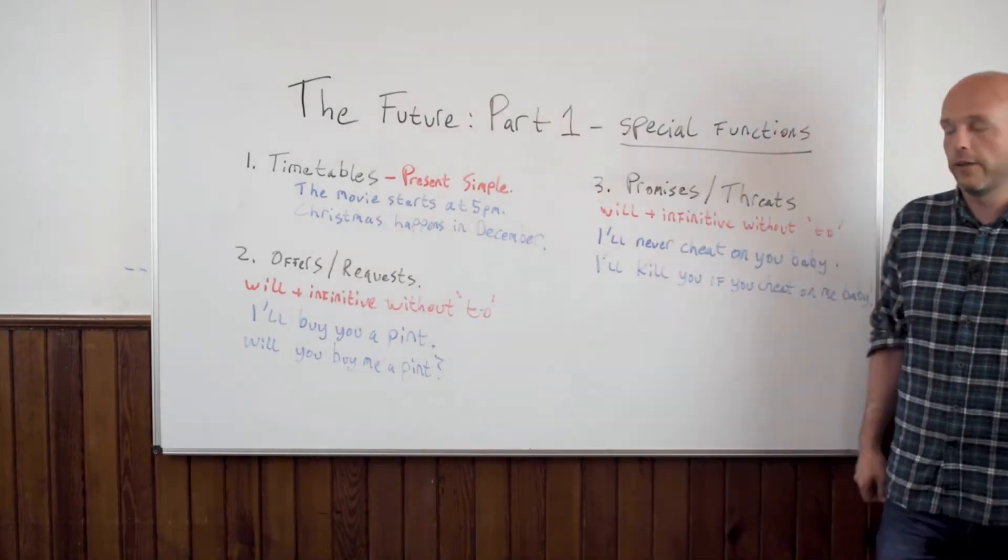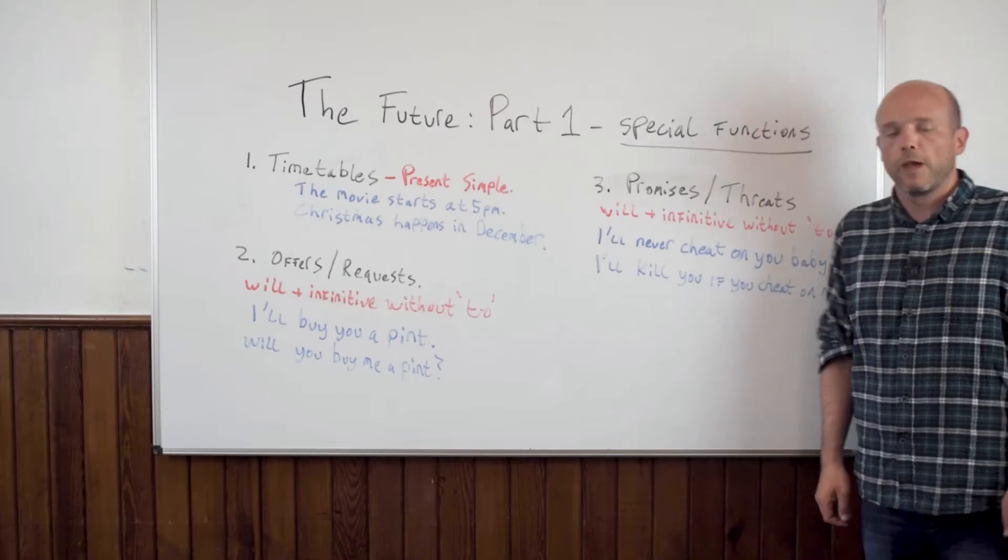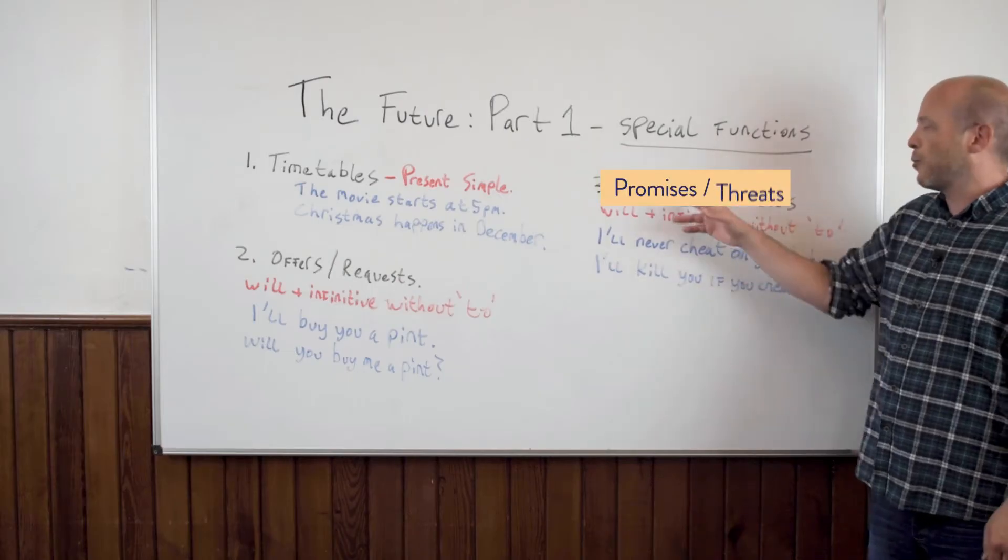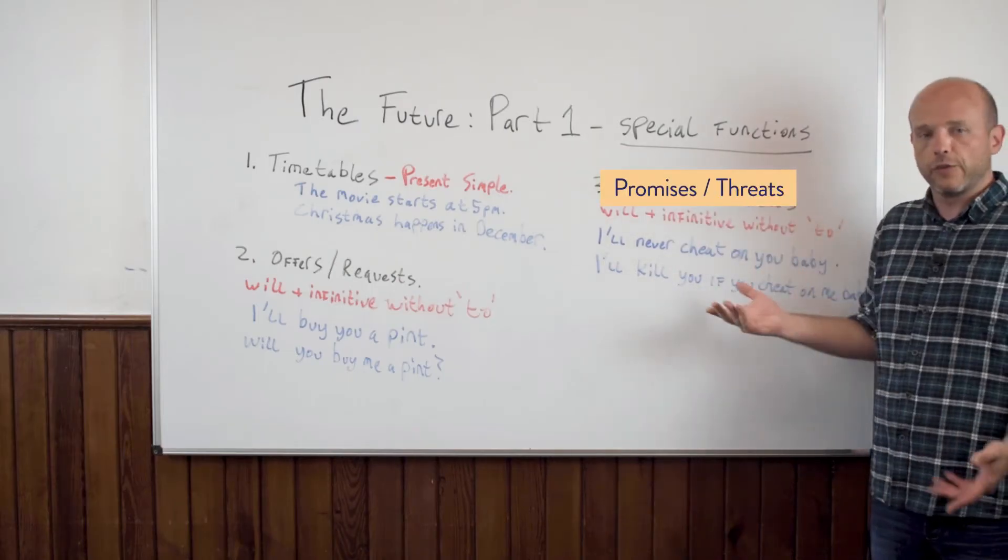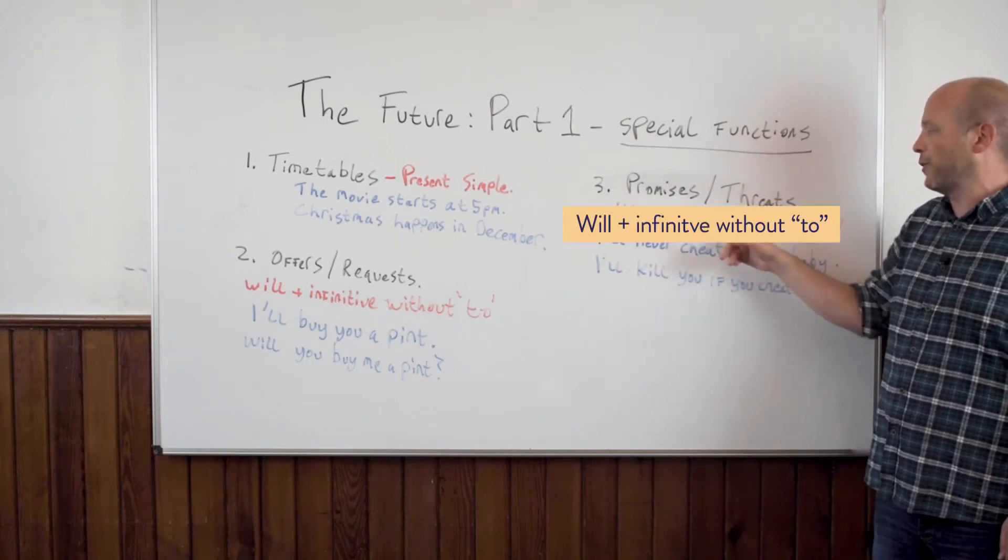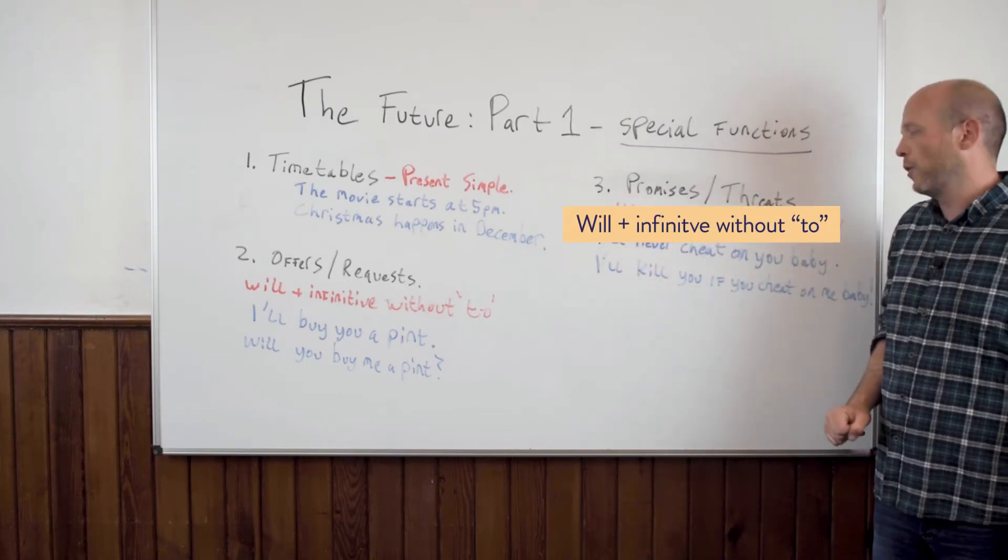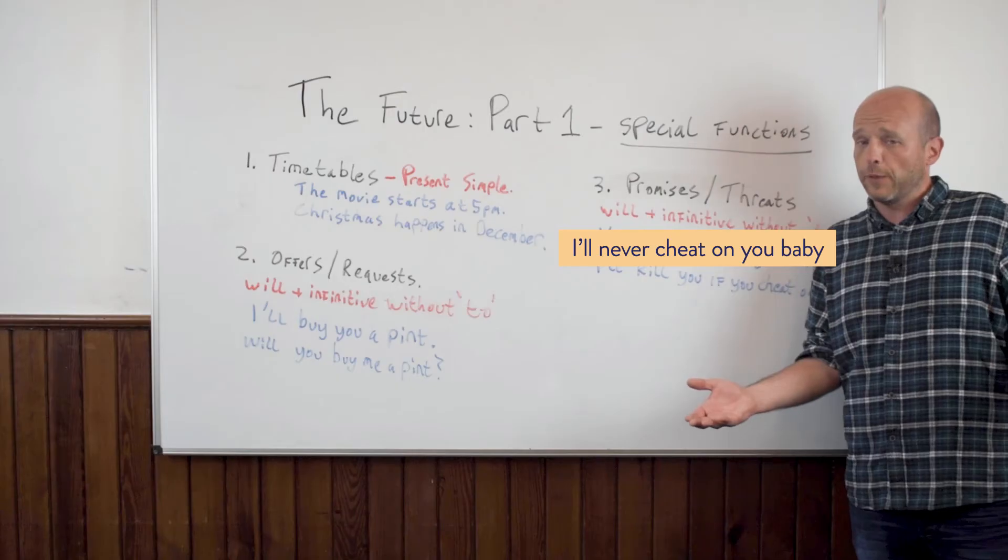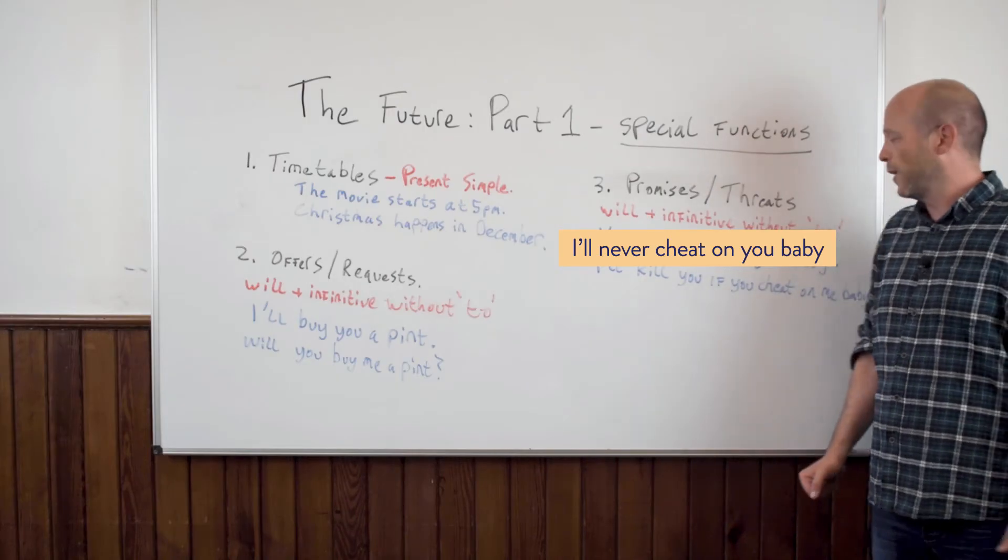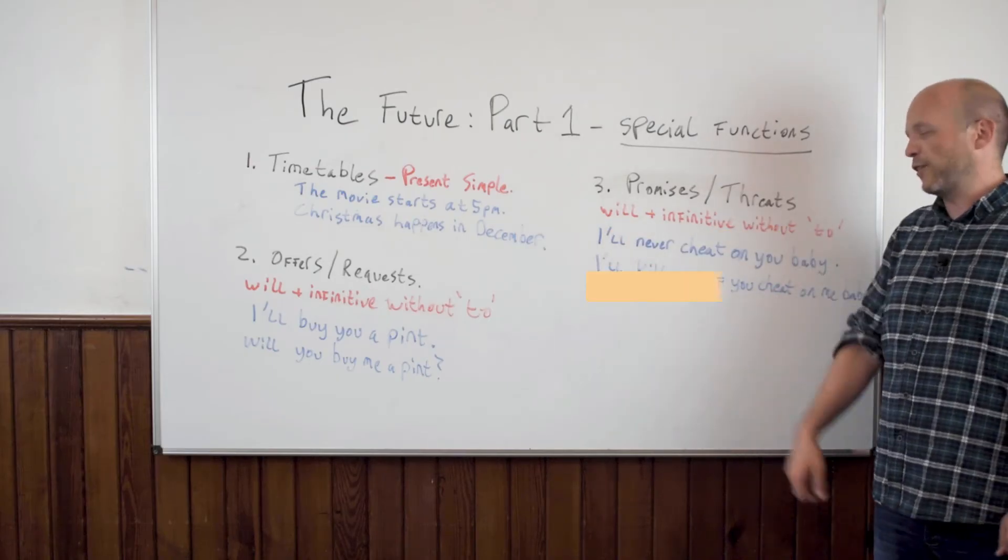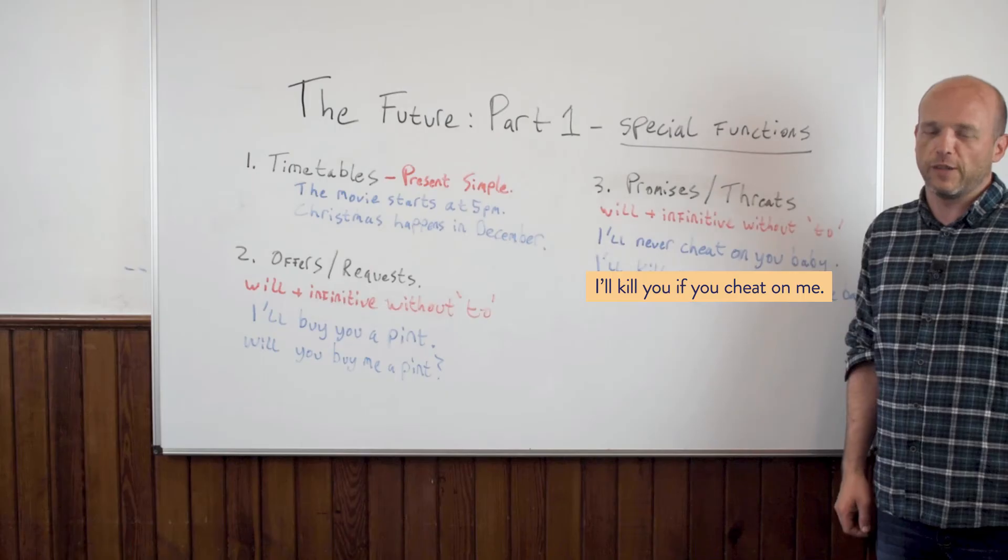Let's have a look at the third special functional area where we talk about the future in English. Promises and their inverse threats. Again, we use will plus the infinitive without to. An example of this, I'll never cheat on you, baby. We've all heard those words once in a while, and maybe we said these other ones as well. A threat. I'll kill you if you cheat on me.